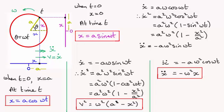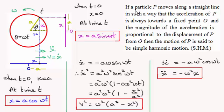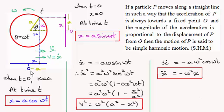This brings us back to the definition of simple harmonic motion given earlier: the acceleration of P is always towards a fixed point O, and its magnitude is proportional to the displacement from O. That's exactly what we have in the equation ẍ equals minus ω²x. The acceleration is proportional to displacement x, with constant of proportionality ω². The minus sign confirms the acceleration is directed back towards the fixed point O. So when asked to prove a particle performs SHM, you need to prove this result.